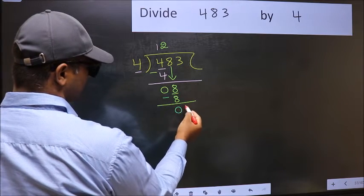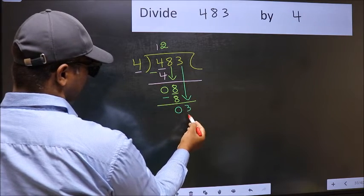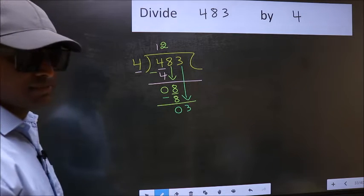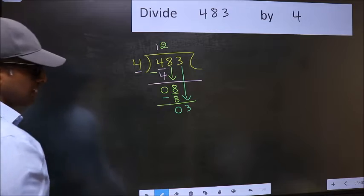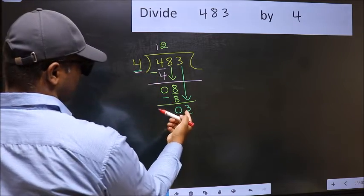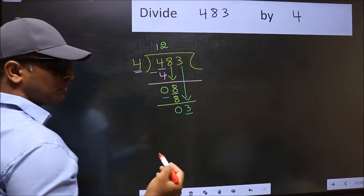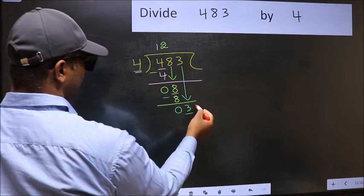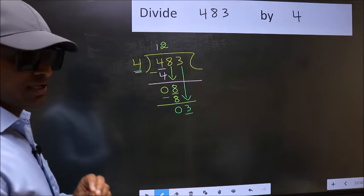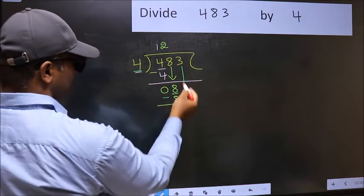After this, bring down the beside number, so 3 down. After this step, the mistake happens. Here we have 3 and here 4. 3 is smaller than 4, so what many do is they directly put a dot and take 0, which is wrong. Why is it wrong? Because just now you brought this number down, and in the same step you want to put a dot and take 0, which is wrong.